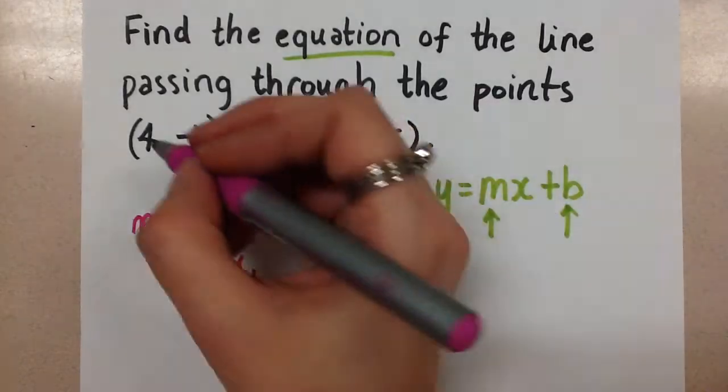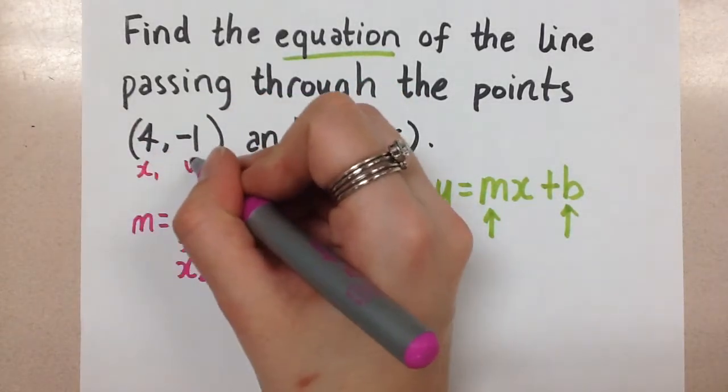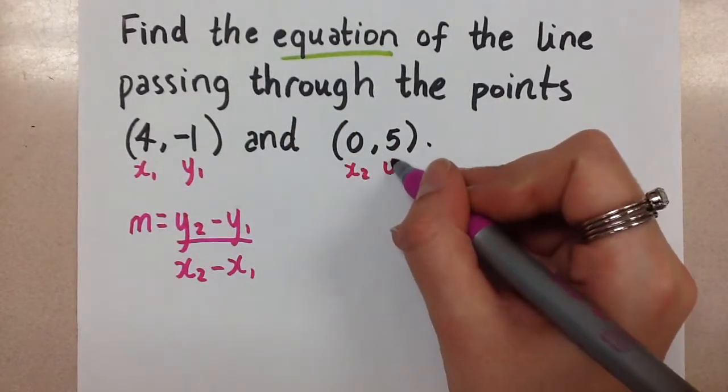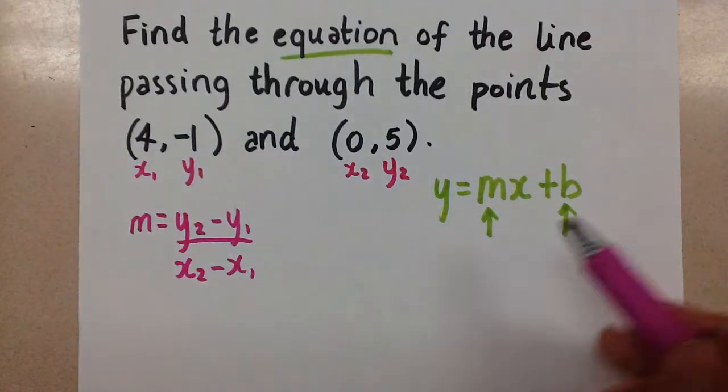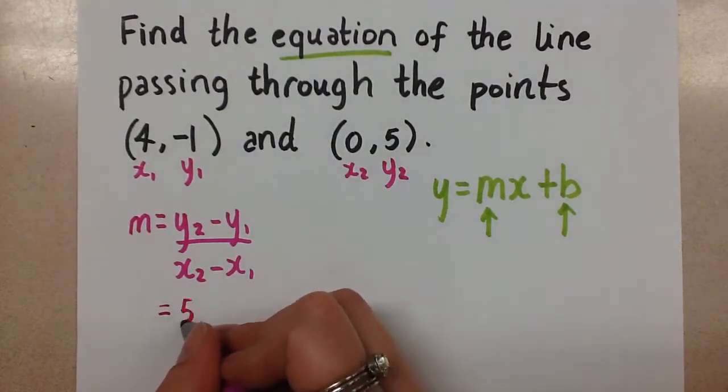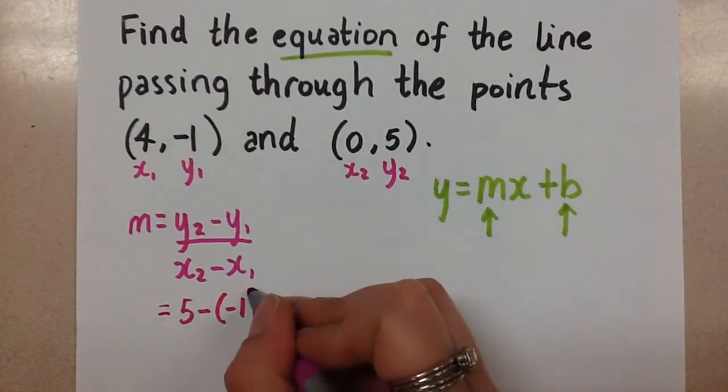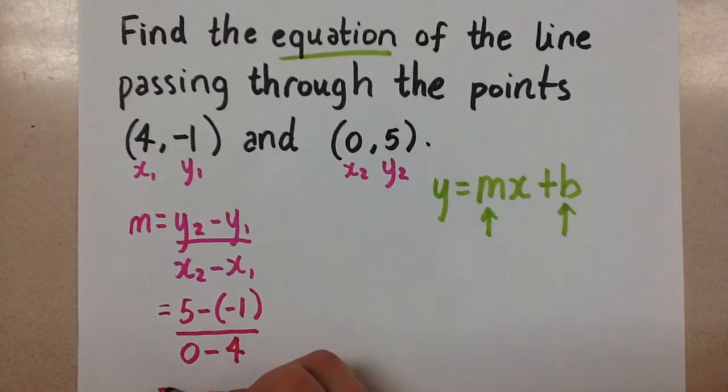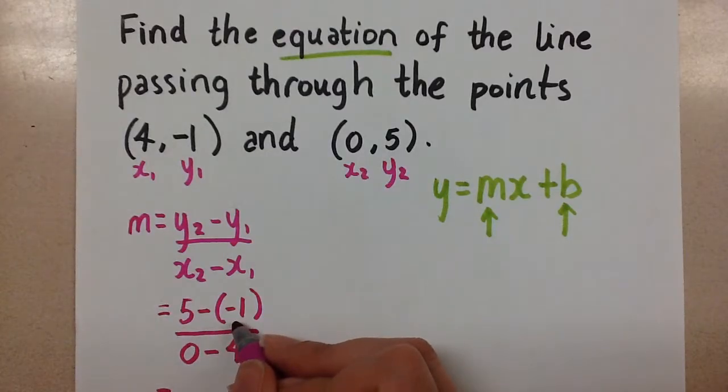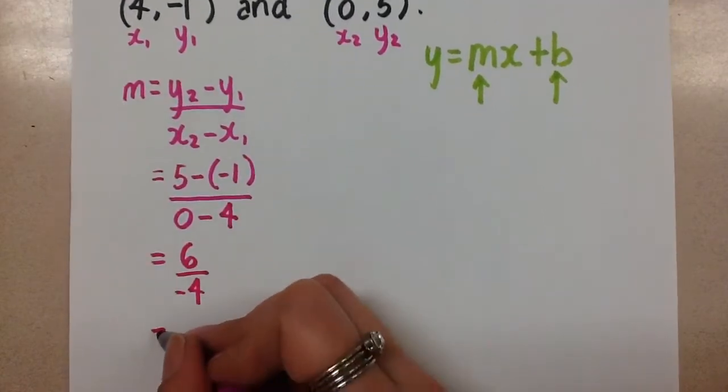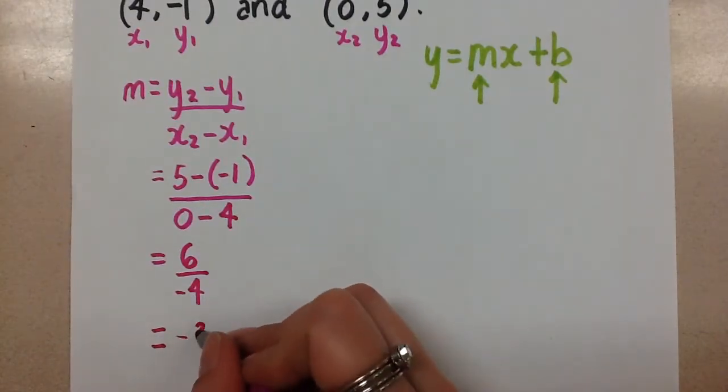So if we go back to our points, we can label them point 1 x1 y1, point 2 x2 y2, and that will help us keep the order intact here for this slope formula. So let's plug it in. 5 minus negative 1 over 0 minus 4. 5 minus negative 1 is 5 plus 1, which is 6, over 0 minus 4, which is negative 4. Let's reduce this fraction, and that will give us negative 3 over 2.